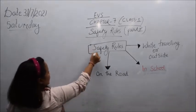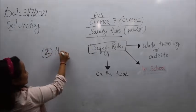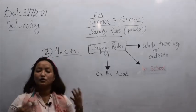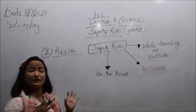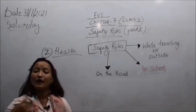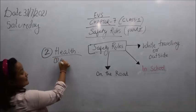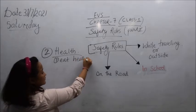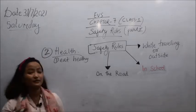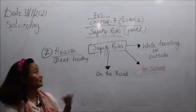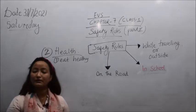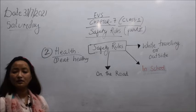Now let's look at safety rules for health. Safety rules are not only for the road — they apply to our health as well. The first rule: eat healthy. Kids often prefer junk food like KFC, Domino's, and such items, but in the long term those are not healthy. You should eat fruits, vegetables, and nutritious food.